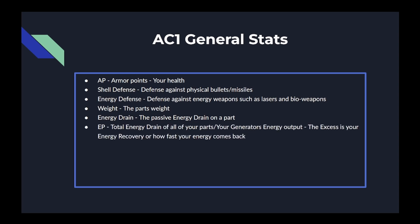The next three stats are on the bottom right of the garage and are total stats for all of your parts. The EP is the total energy drain of all your parts combined on the left side of a slash, and the right side is your generator's energy output. The excess between these is your energy recovery, or how fast your energy comes back. So if all of your parts total have an energy drain of 5,000 and your generator has an output of 9,200, the excess 4,200 is what's used for refilling the energy gauge.